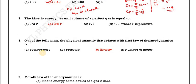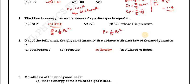Question 7: The kinetic energy per unit volume of a perfect gas equals 3/2 p. Starting from p equals 1/3 rho c squared, we get 3p equals rho c squared, so 3/2 p equals 1/2 rho c squared.